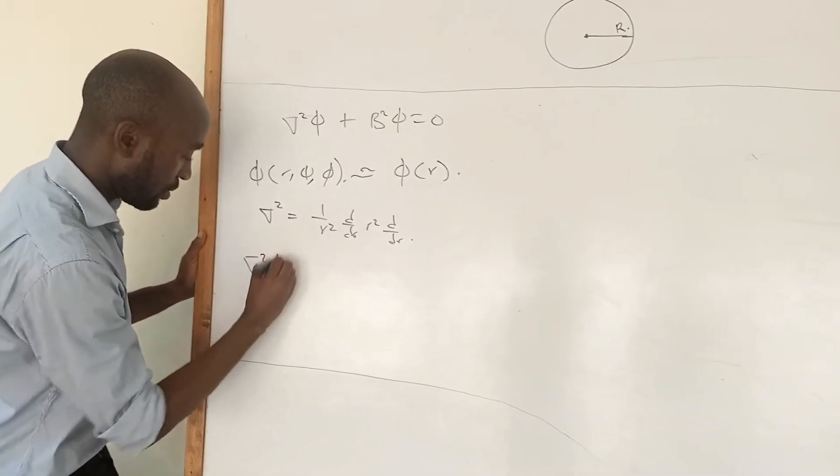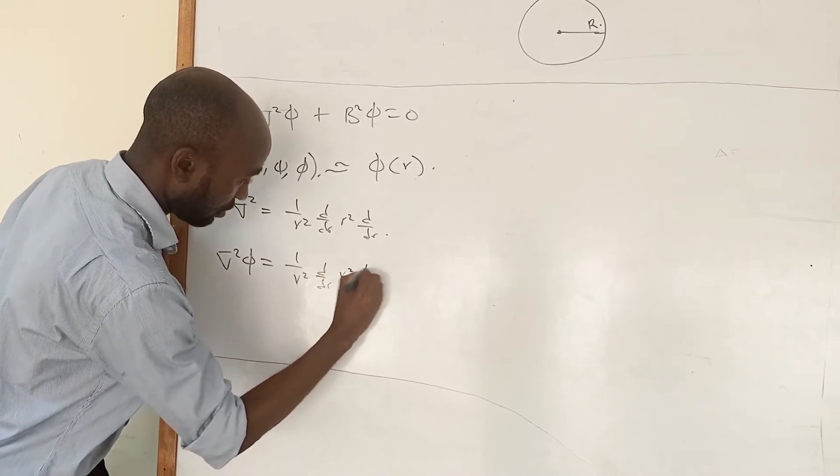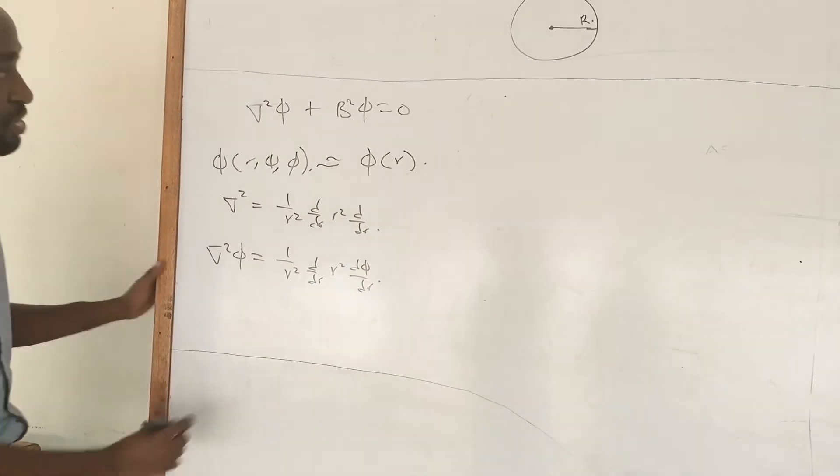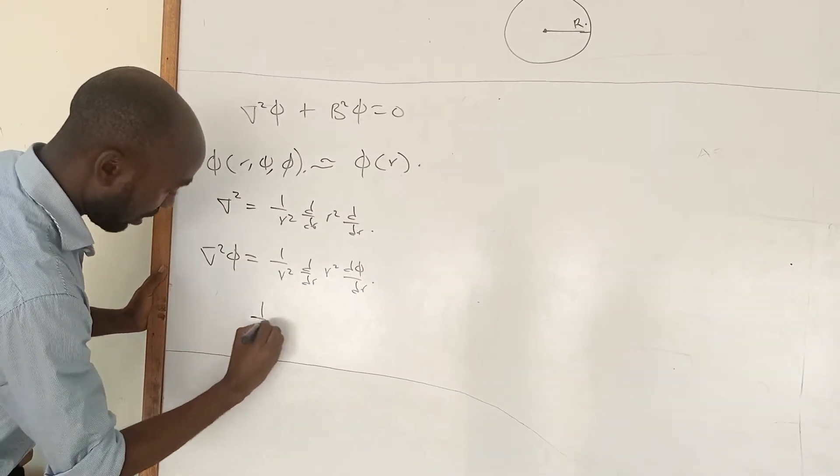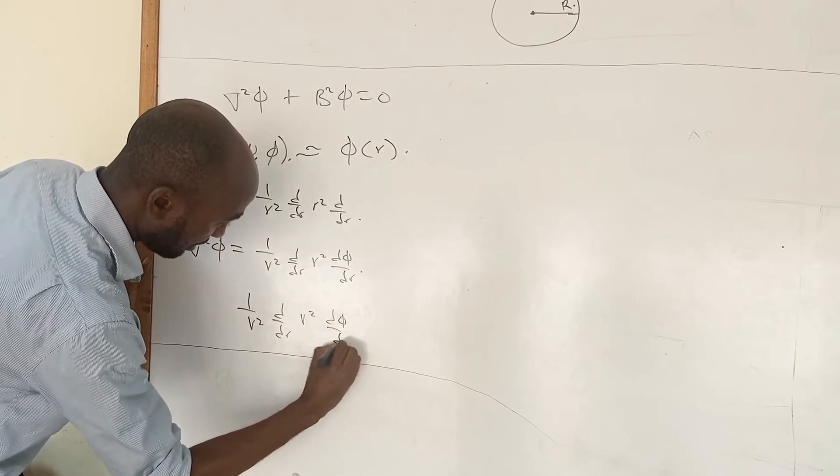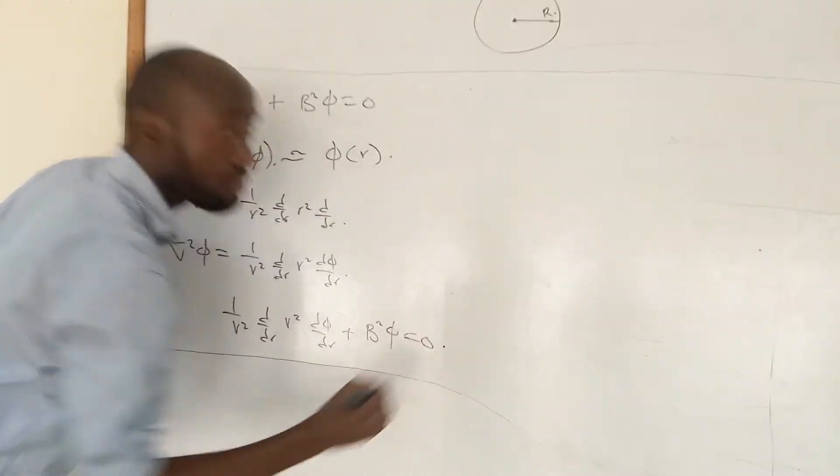So if I introduce it here, this one becomes 1 over r squared d over dr r squared d phi over dr plus B squared phi is equal to zero.